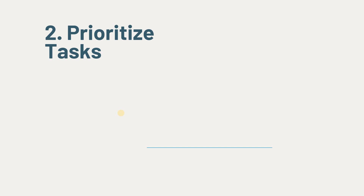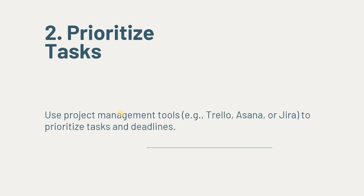Make sure that you prioritize tasks. There are tools like Trello, Asana, and Jira which help you prioritize tasks and deadlines. Team members should only focus on high-priority tasks first to avoid unnecessary distractions.